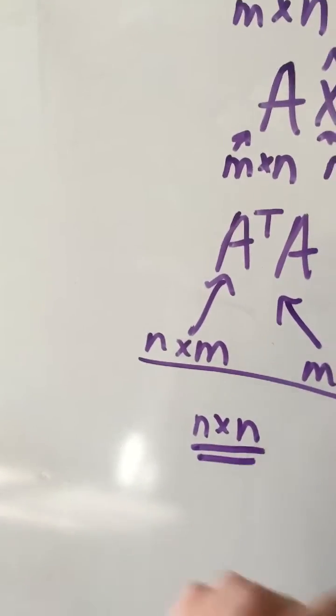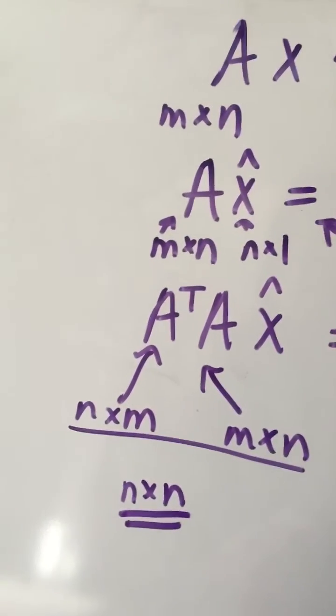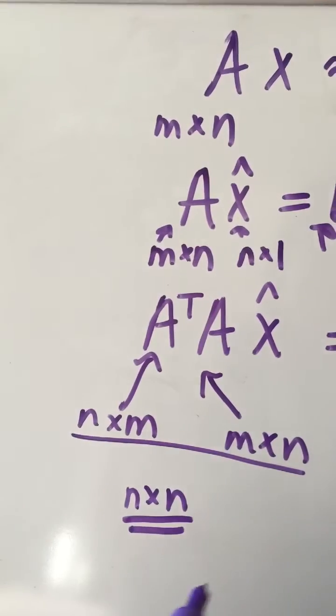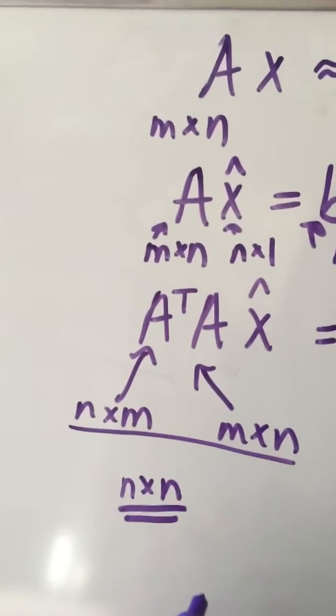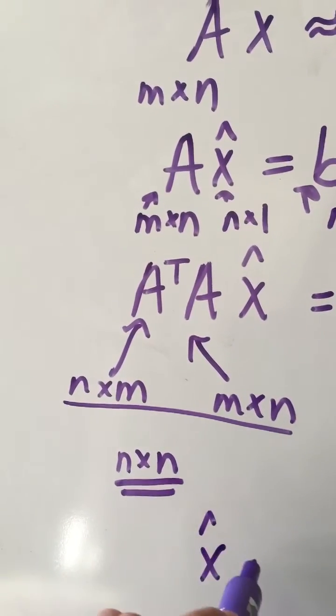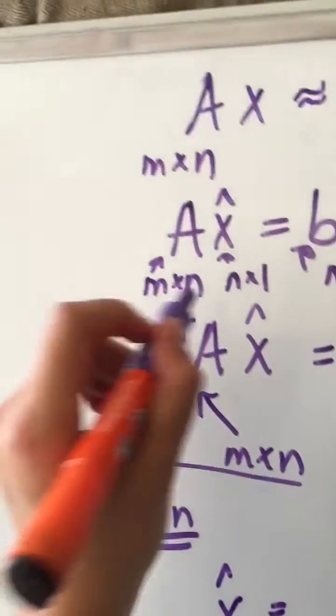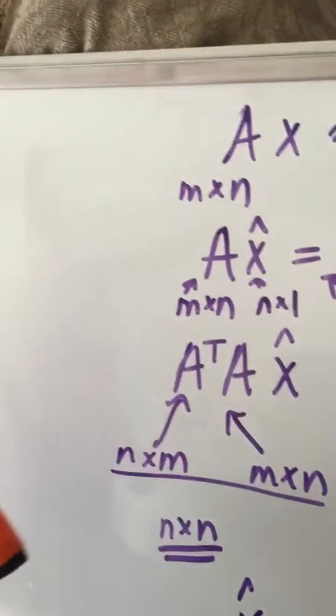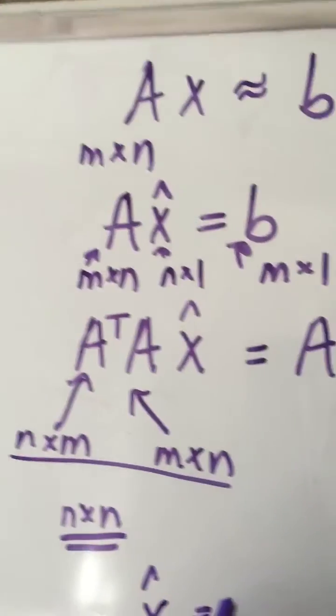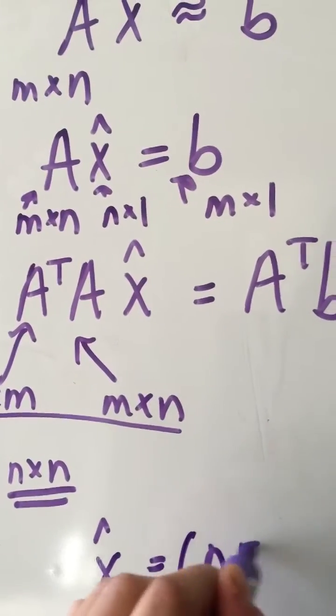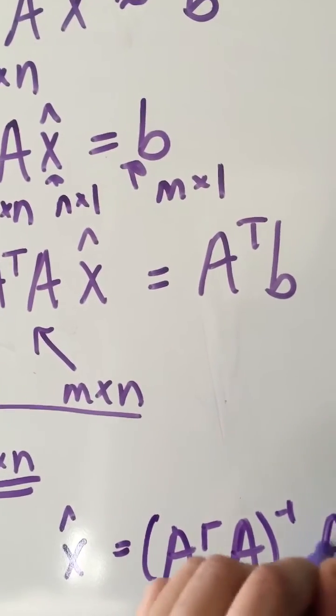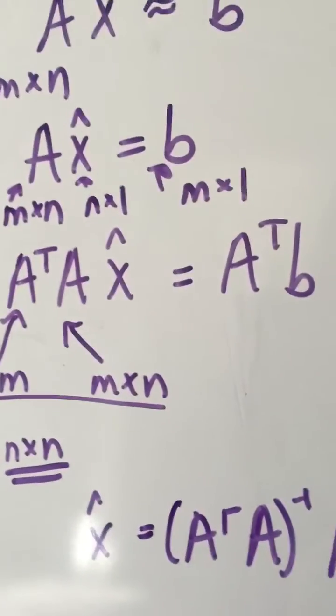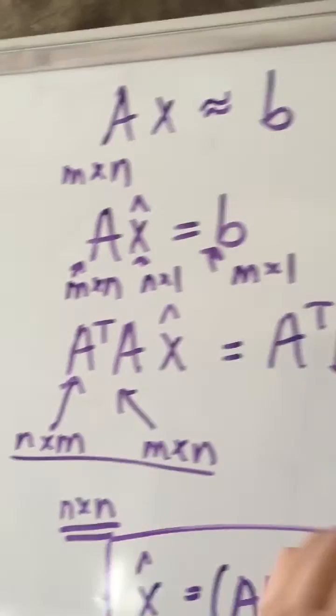And we want to isolate x again so we have x hat equals, by left hand multiplying A transpose A inverse, we have x hat equals A transpose A inverse times A transpose b.